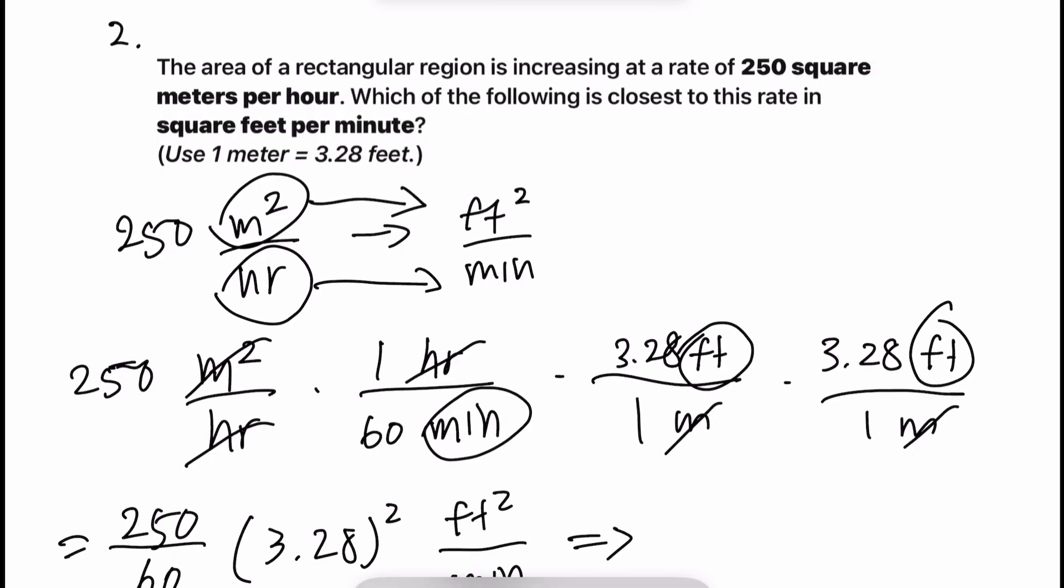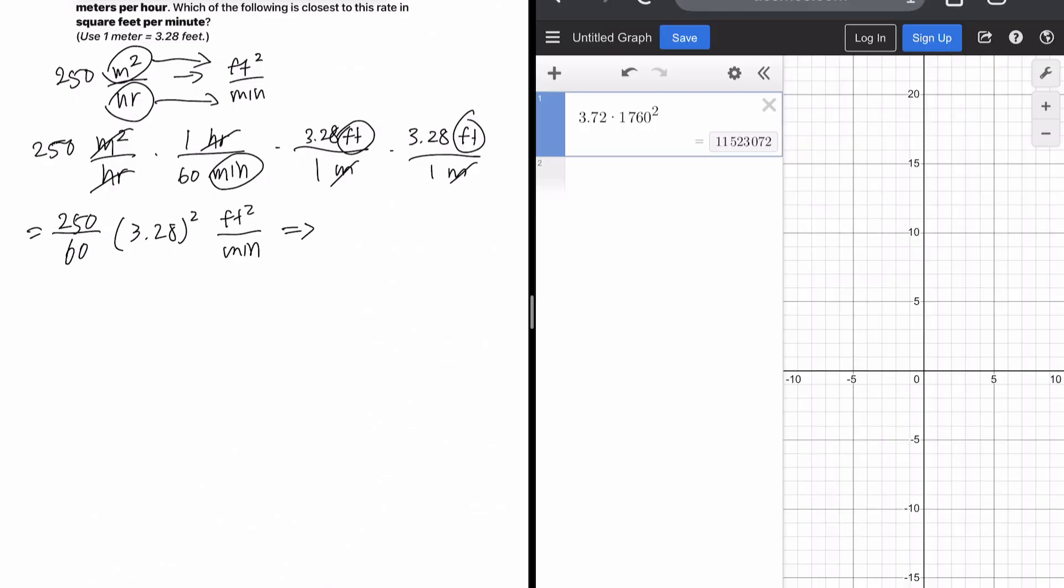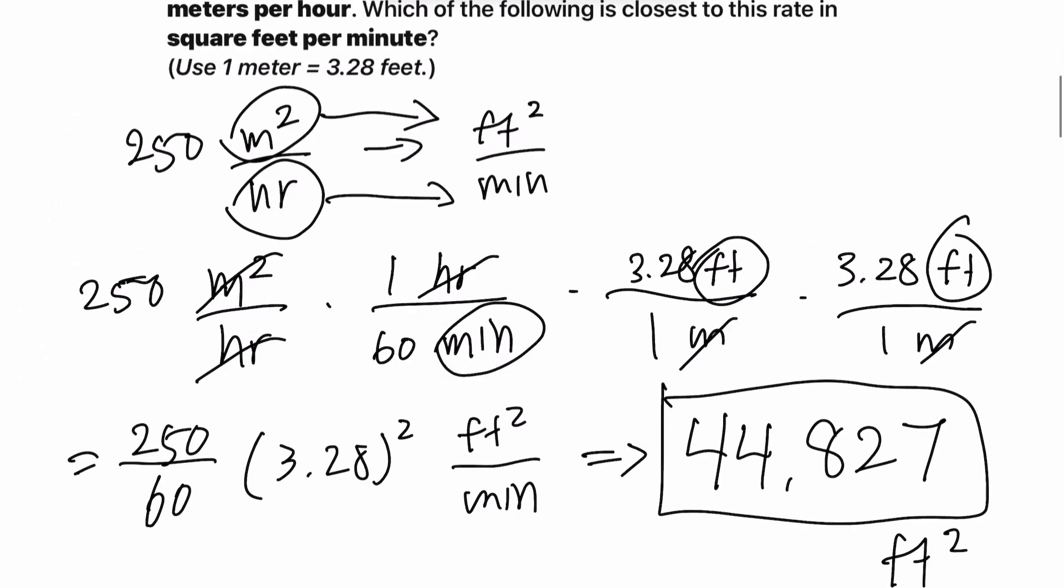Feet squared over minutes. What does that equal to? We're about to find out. All right. We have 250 divided by 60 times 3.28 squared. 44.827. And this is in feet squared over minutes. That's our units. Okay. Wonderful.